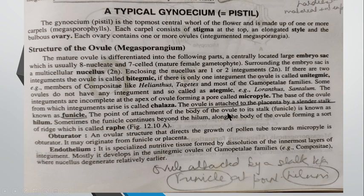The point where this ovule is attached to the funicle is known as the hilum. So here we have a few key terms: the micropyle, where the integuments are incomplete and a pore is formed; the chalaza, which is the end opposite to the micropilar end, from where the integuments arise.